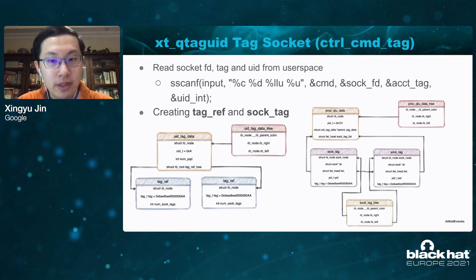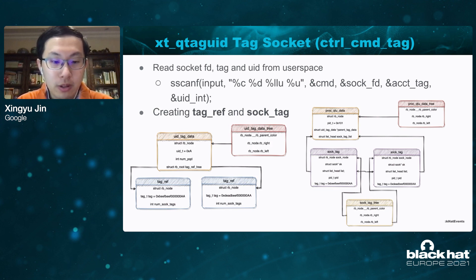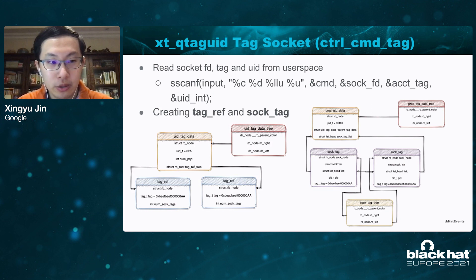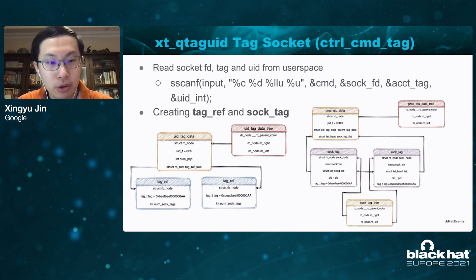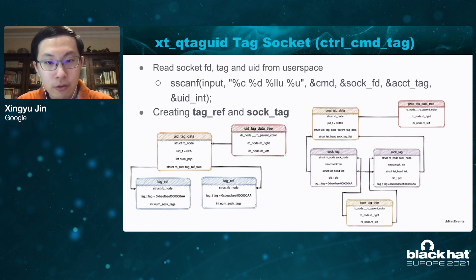When a user-space program tags a socket, it has to provide information such as the socket file descriptor and user ID. Two different data structures will be allocated in terms of the UID and the PID. The module will find the corresponding UID tag data structure from the uid_tag_data tree, which is a global variable, allocate a structure tag_ref, and initialize the tag and reference count. Following a similar pattern, the kernel finds proc_qtaguid_data from a global variable and allocates a structure called soc_tag. Different soc_tag structures are linked together. Please remember the soc_tag structure, because later we will see a use-after-free happen here.